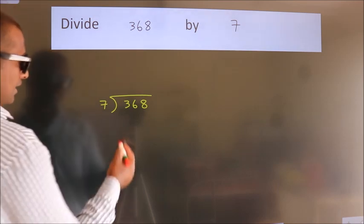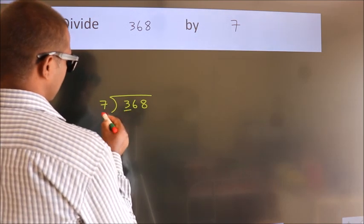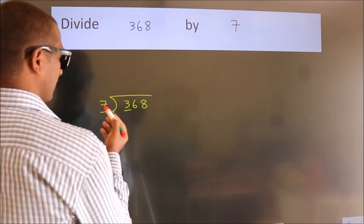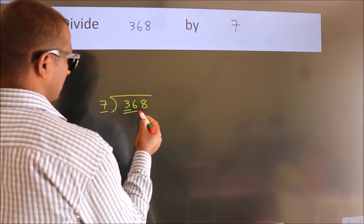Next, here we have 3, here 7. 3 is smaller than 7, so we should take two numbers, 36.